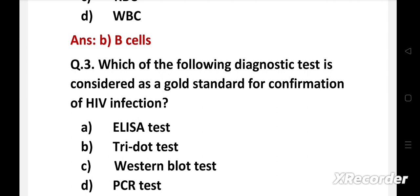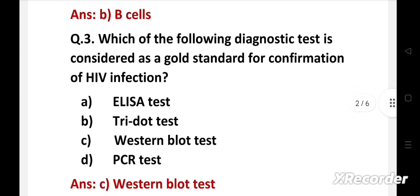Which of the following diagnostic test is considered as a gold standard for confirmation of HIV infection? Option A ELISA test, B Tridot test, C Western blot test, D PCR test. Right answer is Option C, Western blot test. Western blot test is often used as a follow-up test to confirm the symptoms of HIV infection. This test is considered to be the gold standard for confirmation of HIV infection.